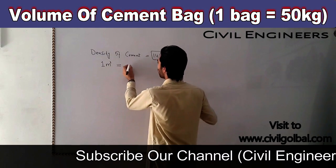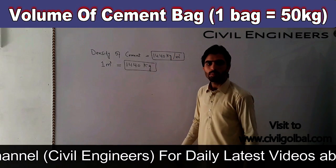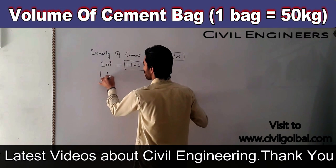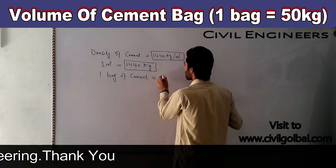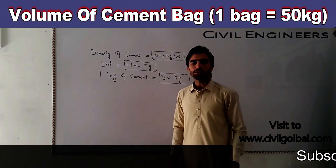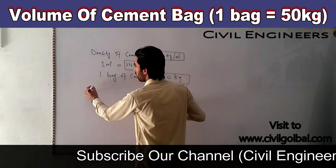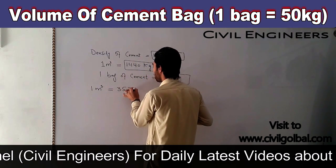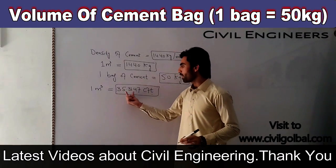One meter cube is equal to 1440 kg. One bag of cement weighs 50 kg, and I need to find out the volume of one bag of cement. Also, one meter cube is equal to 35.3147 CFT — you may already know this.